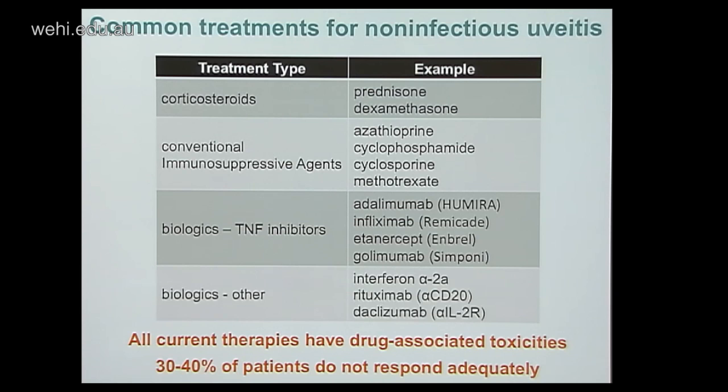Treatments for uveitis are similar to those used in other inflammatory conditions like rheumatoid arthritis. These include corticosteroids such as dexamethasone, conventional immunosuppressive agents like cyclophosphamide or methotrexate, biologics — most commonly TNF inhibitors — and others like rituximab with limited success. The problem is that all current therapies have drug-associated toxicities, and 30 to 40 percent of patients do not respond adequately.